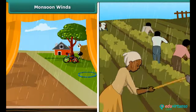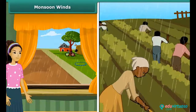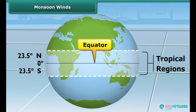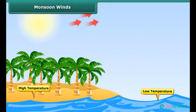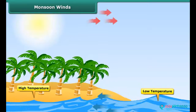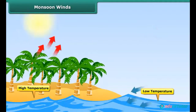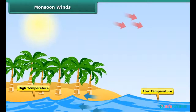Monsoon winds give us relief from the long hot summers. During the hot summers, the land near the equator warms up very quickly. The temperature of the land is always higher than that of water in the oceans. The warm land heats the air above it, and the warm air rises up and expands. This causes winds to flow from the oceans towards the land — we call these monsoon winds. Monsoon winds carry water from the oceans and bring rain.